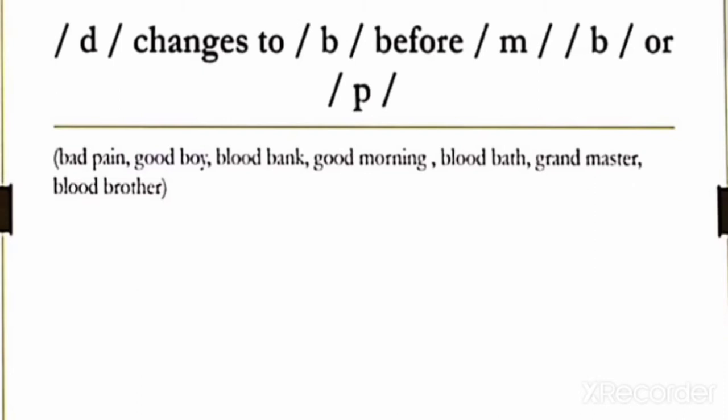Like bad pain, good boy, blood bank, good morning, blood bath, grandmaster, blood burner. So this is not bad pain, this is not good boy, this is not blood bank, good morning. You will have to make practice like that. A bad pain, good boy. So yeah, assimilation. This is the mixing of sound, you can say that.